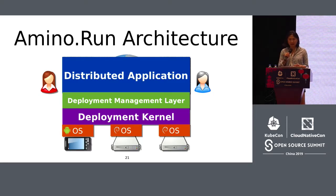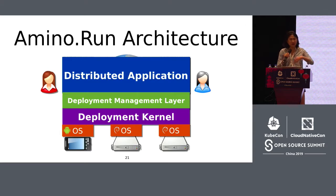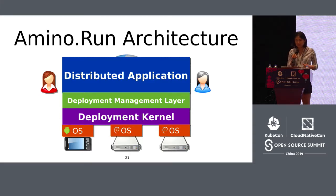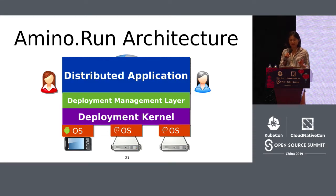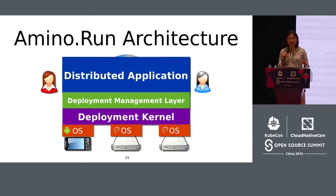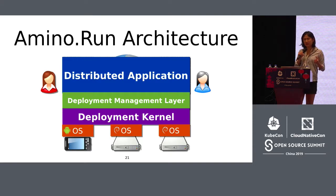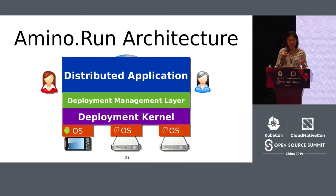At the very bottom layer, we have a deployment kernel, which implements best-effort basic deployment tasks — like making a call to a different part of the application or finding other components in the application. But the most important part of the Amino Run architecture is the deployment management system layer. The deployment management layer extends the functionality of the deployment kernel so that application programmers can choose what kind of functionality the deployment kernel will offer each part of their application.